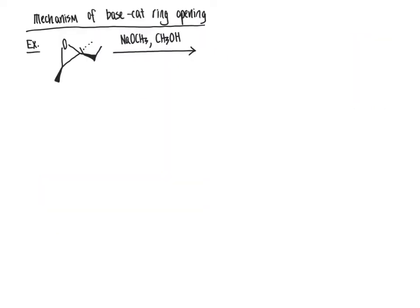Let's walk through the mechanism of a specific example reaction. We recognize the conditions as basic because we would anticipate the oxygen to be an anion — oxygen is not particularly stable as an anion and is eager to react. There's no acid available to protonate, so don't think about protonation as the first step. The first step is that the nucleophile attacks the less sterically hindered carbon of the epoxide.